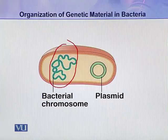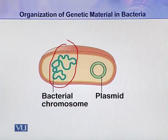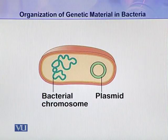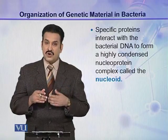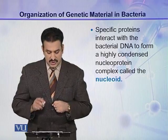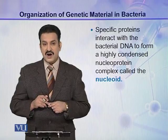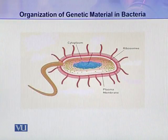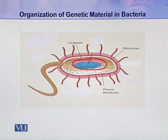This bacterial chromosome is present in the cell, folded and looped at various points, and also linked or attached to the plasma membrane at different points. Specific proteins interact with the bacterial DNA to form a highly condensed nucleoprotein complex which is called the nucleoid. So different proteins interact with the DNA molecule and form this highly condensed structure — the nucleoid — which is present in the bacterial cell.